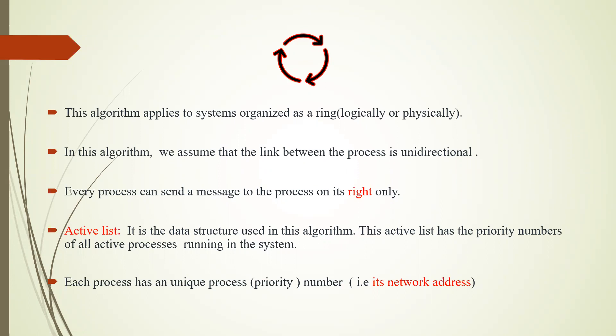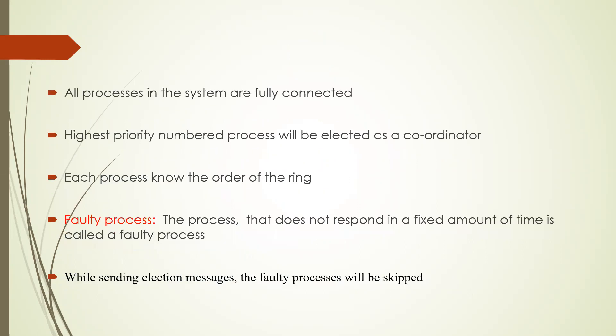What is an active list? It is a data structure used in this algorithm. The active list holds the priority numbers of all active processes running in the system. Each process has a unique process number, that is, a priority number. This priority number may be its network address.